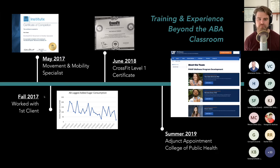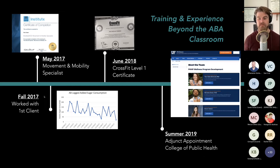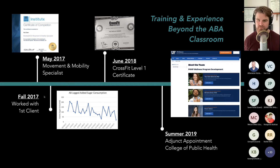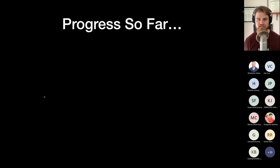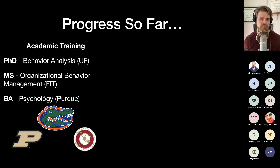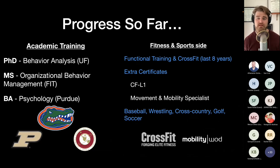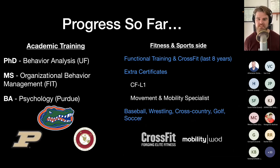After graduating I got an adjunct appointment to help with wellness programs at the College of Public Health. For this group it's important to note that this is training that goes beyond the ABA classroom. Most coursework is already embedded with special education and developmental disabilities content by default. To get into OBM, behavior-based safety, or health and fitness you have to actively seek out your niche — just as I did.